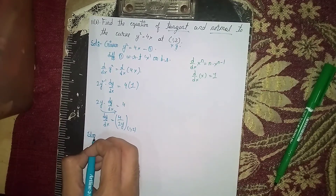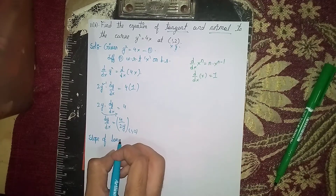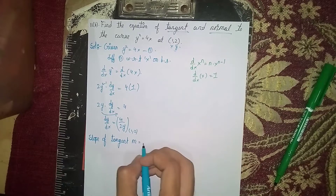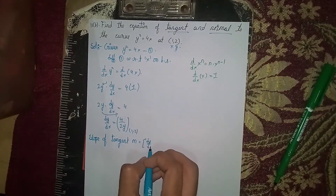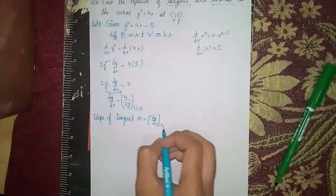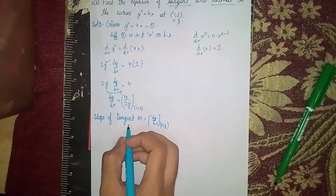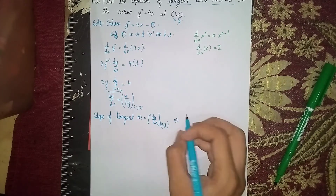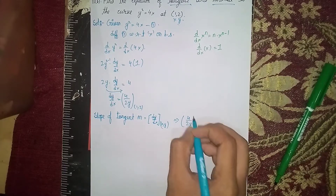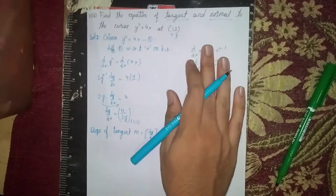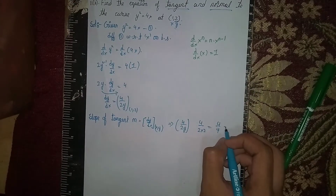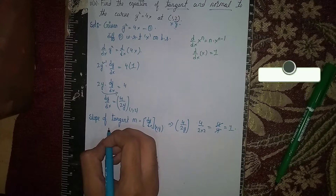The slope of tangent m equals 4 divided by 2y. Substituting y equals 2: m equals 4 divided by (2 times 2) equals 4 divided by 4 equals 1. So m equals 1.